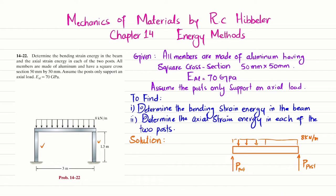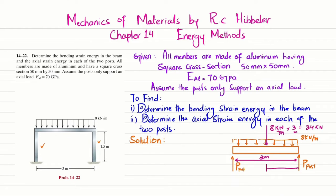We will find P_post using the equation of equilibrium. First, we convert the distributed load into a point load. This equals 8 kN/m multiplied by the total beam length of 3 meters, giving 24 kN. This resultant acts at a distance of 3 divided by 2, which is 1.5 meters from either side.